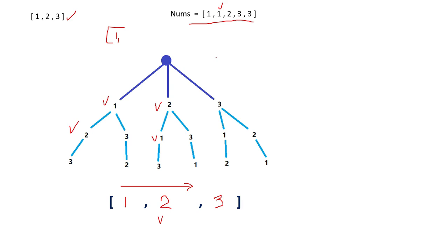Instead, we need to keep a count of all distinct numbers and track how many times each has been used. If a number still has remaining count, we can use it again. For example, if we've used 1 once but there are two 1s, we can still choose 1 again. Once a number's count reaches zero we can no longer use it. The data structure that helps us here is a HashMap.